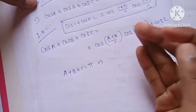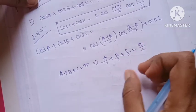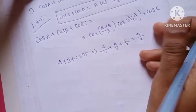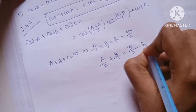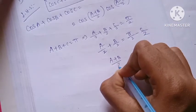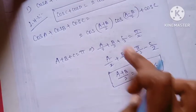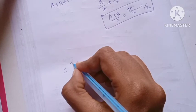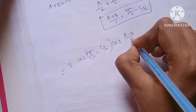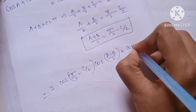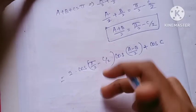Since A plus B plus C equals pi, we have A/2 plus B/2 plus C/2 equals pi/2. That is why A plus B divided by 2 equals pi/2 minus C/2. Now we need: 2 cos(pi/2 minus C/2) cos(A minus B)/2 plus cos C.